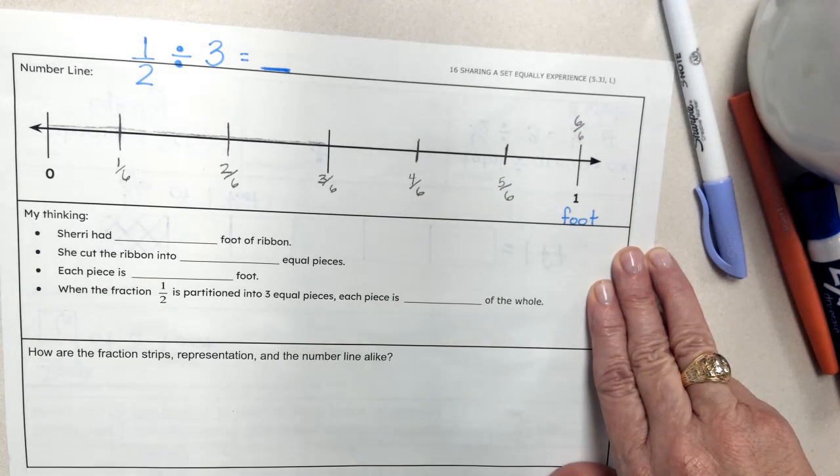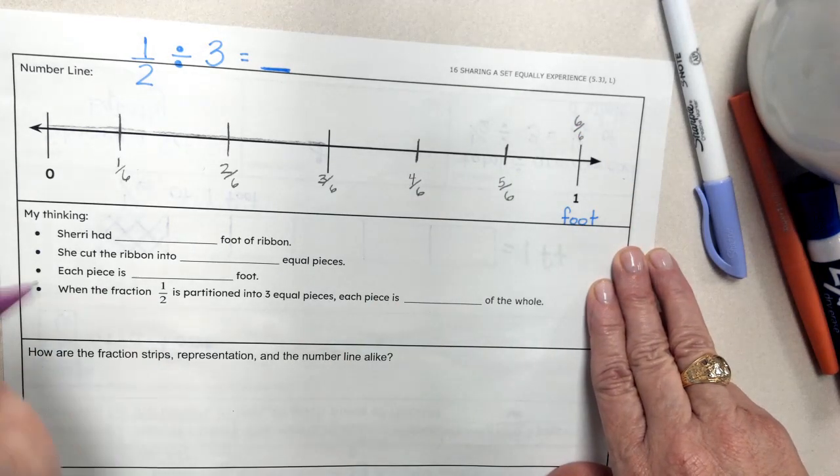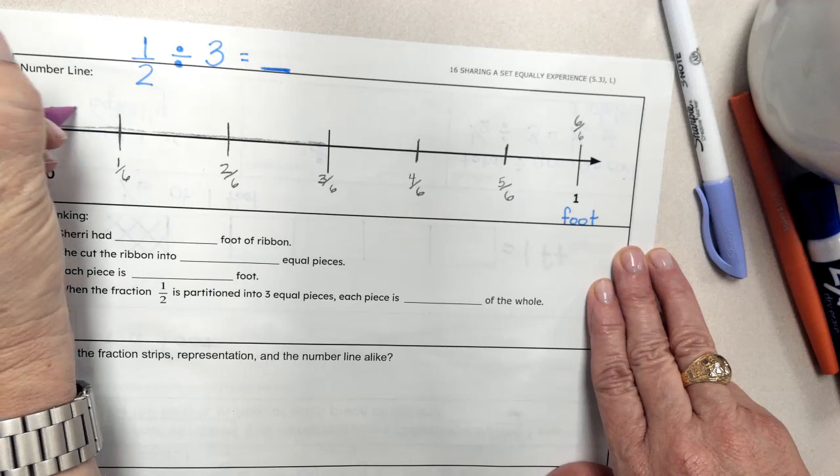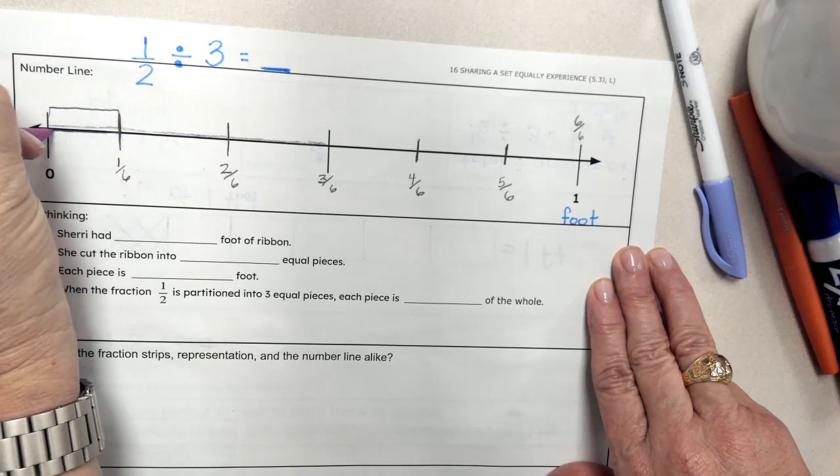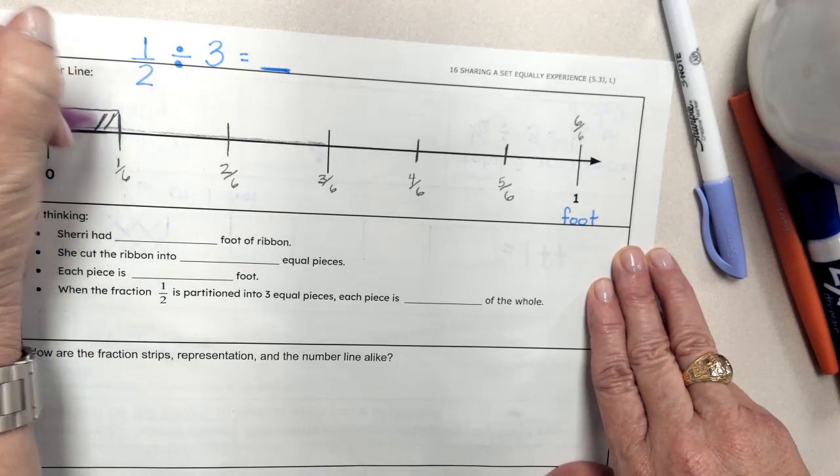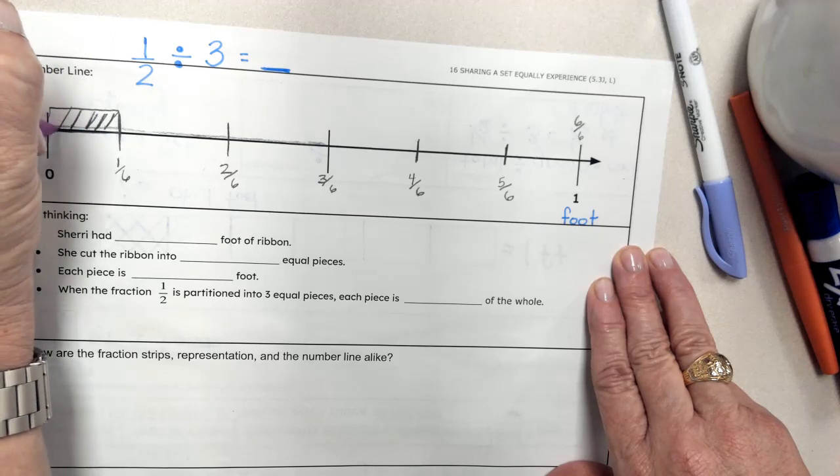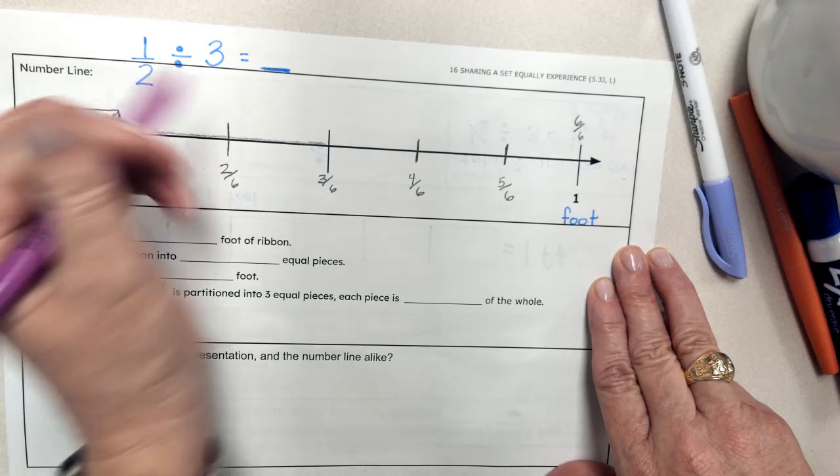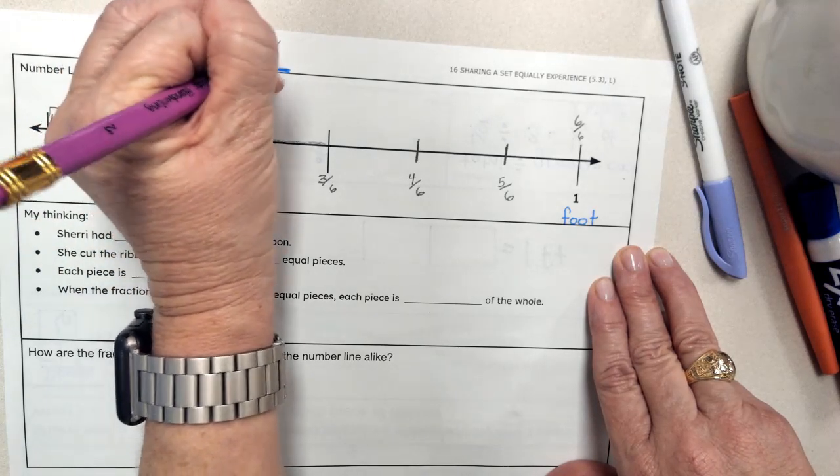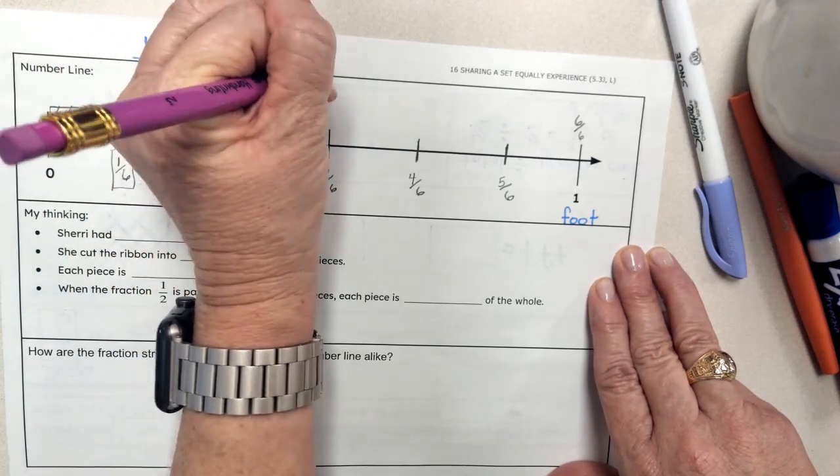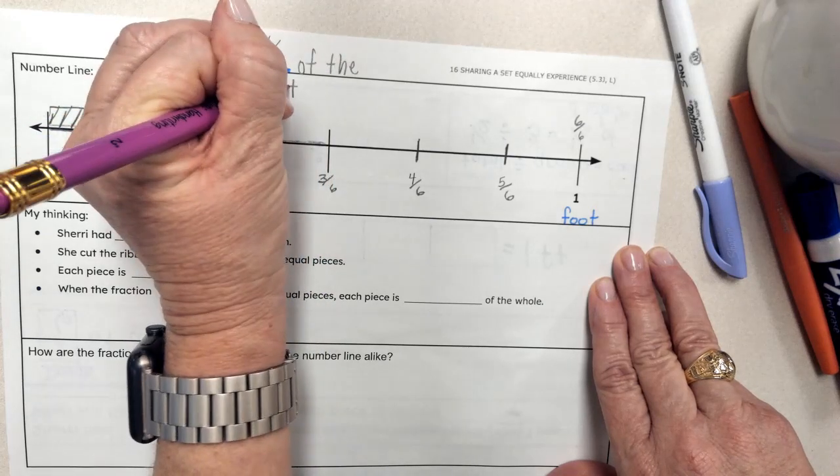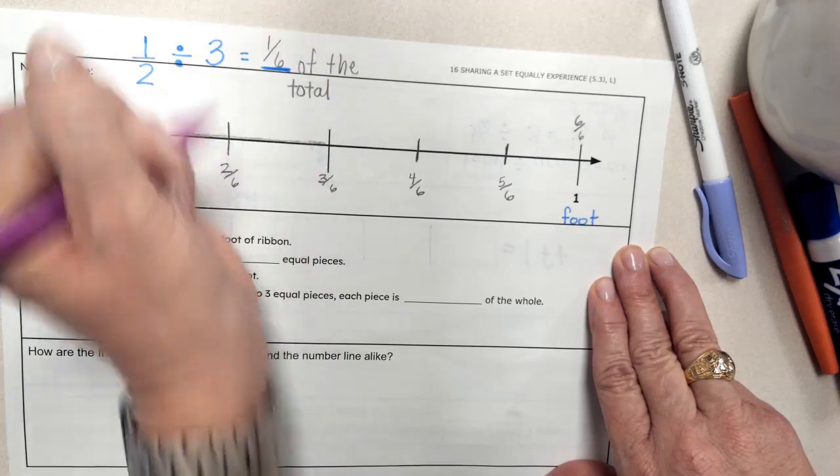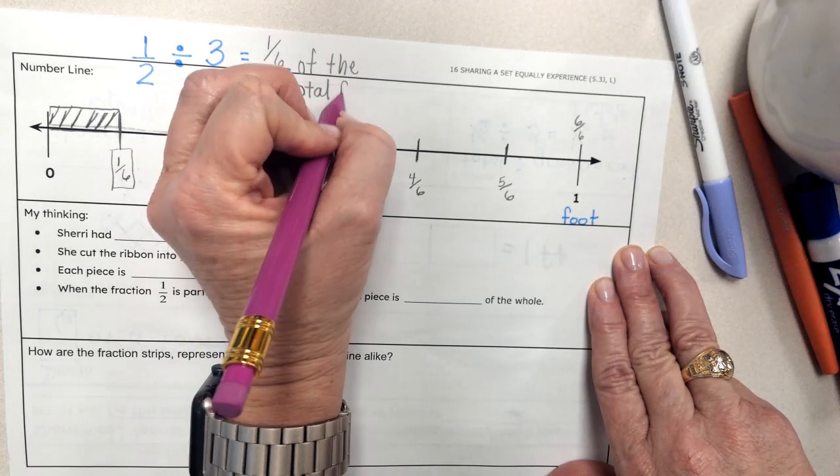And remember, we want to know what one piece is worth, so one piece would be one part of the whole foot. And so that answer is going to end up being one-sixth of the total, one-sixth of the total foot.